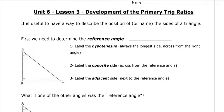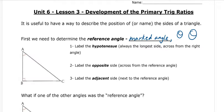First we're going to determine something called the reference angle. The reference angle is a marked angle, and we give it a symbol. Sometimes we call it x, or another letter, another variable. But often in textbooks you're going to see a symbol that looks like this — it's called theta, a Greek letter theta. Sometimes we use that to mark angles. We draw it a couple of times so you understand how it is. That's the Greek letter we're going to use to mark an angle.